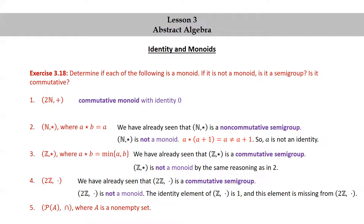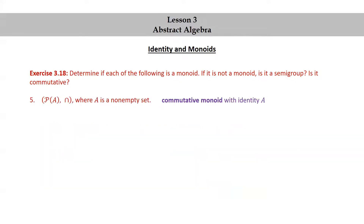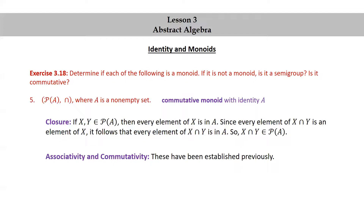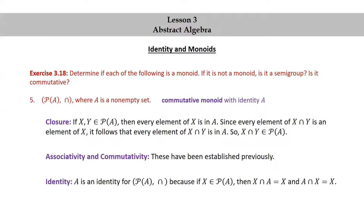The power set of A together with the operation of intersection, where A is a non-empty set, is a commutative monoid with identity A. Closure: if X and Y are in the power set of A, then every element of X is in A, and since every element of X∩Y is an element of X, every element of X∩Y is in A, so X∩Y is in the power set of A. Associativity and commutativity have been established previously. Identity: A is an identity because if X is in the power set of A, then X∩A = X and A∩X = X.